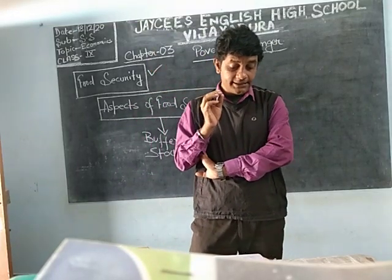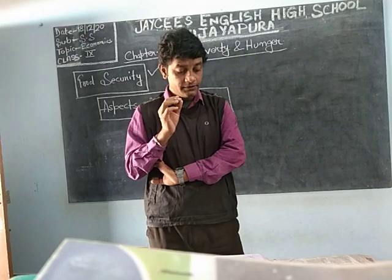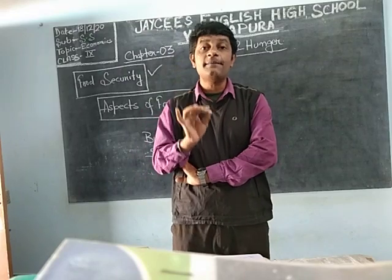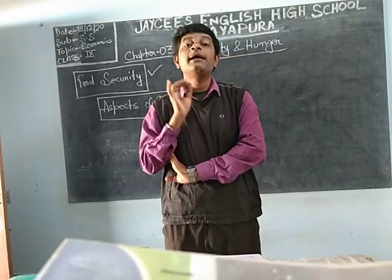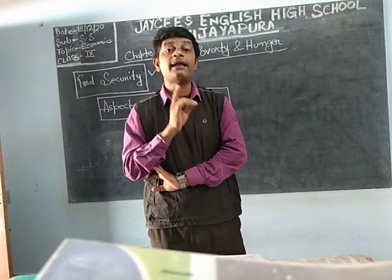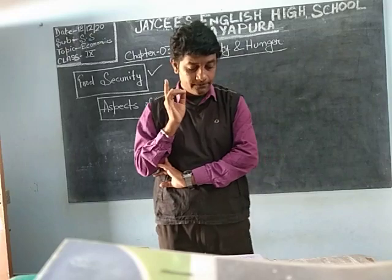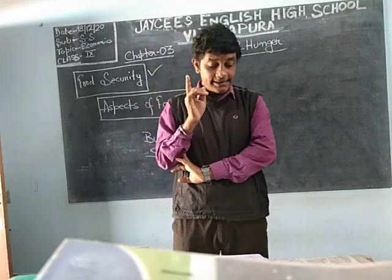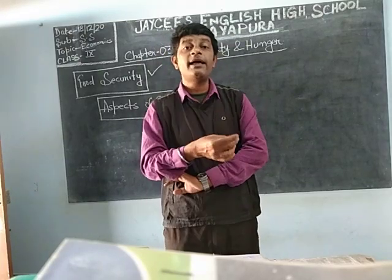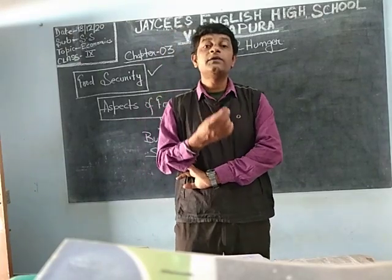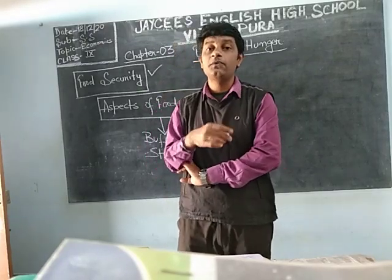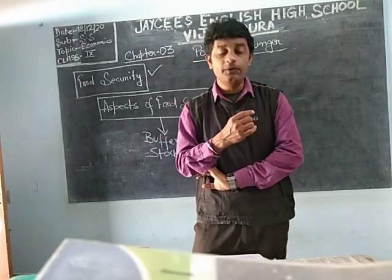What does the food security system include? Food security system includes providing sufficient food to all people in the country — every person needs some minimum amount of food to survive, and the government focuses on ensuring everybody gets that minimum amount. Then, increasing the purchasing power of the poor — income generation and employment should be there so that people are able to buy at least the minimum food they need to survive.